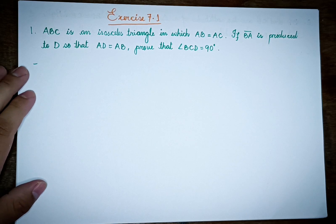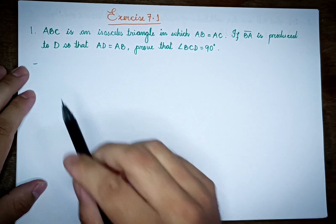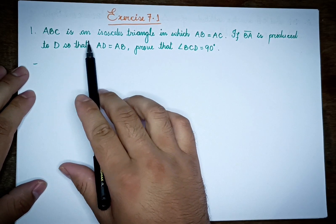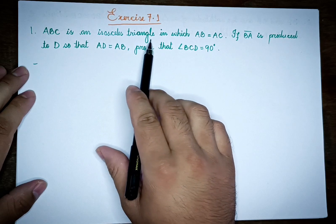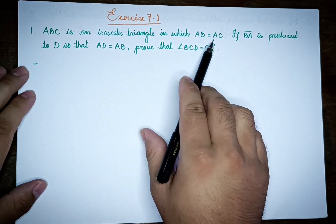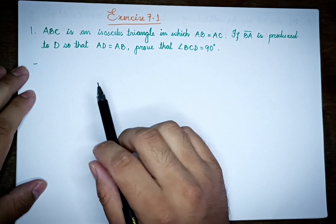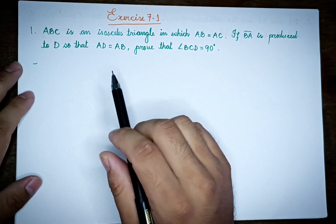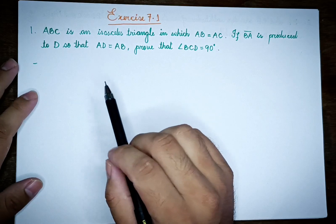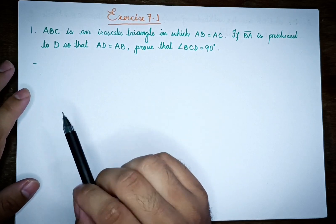Exercise 7.1 is about an isosceles triangle in which AB is equal to AC.